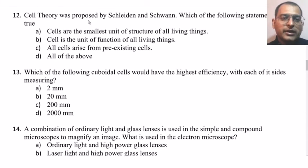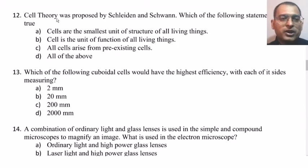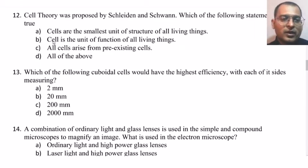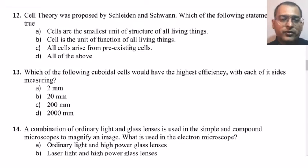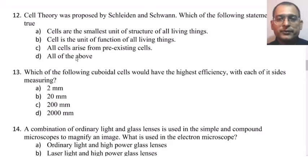Cell theory was proposed by Schleiden and Schwann. Which of the following statements is true? Cells are the smallest unit of structure of all living things; cell is the unit of function of all living things; all cells arise from pre-existing cells — all of the above. The right answer is all of the above.